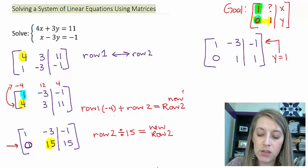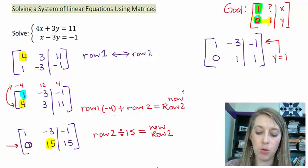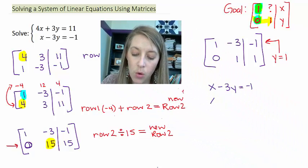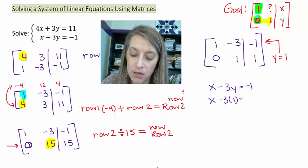And then I substitute it into my first equation. That gives me my x variable. So I have a 1x minus 3y is equal to negative 1, or x minus 3 times my y value, because that's what I found here, equals negative 1. This is negative 3, so if I add 3 to both sides, this gives me x is equal to 2.